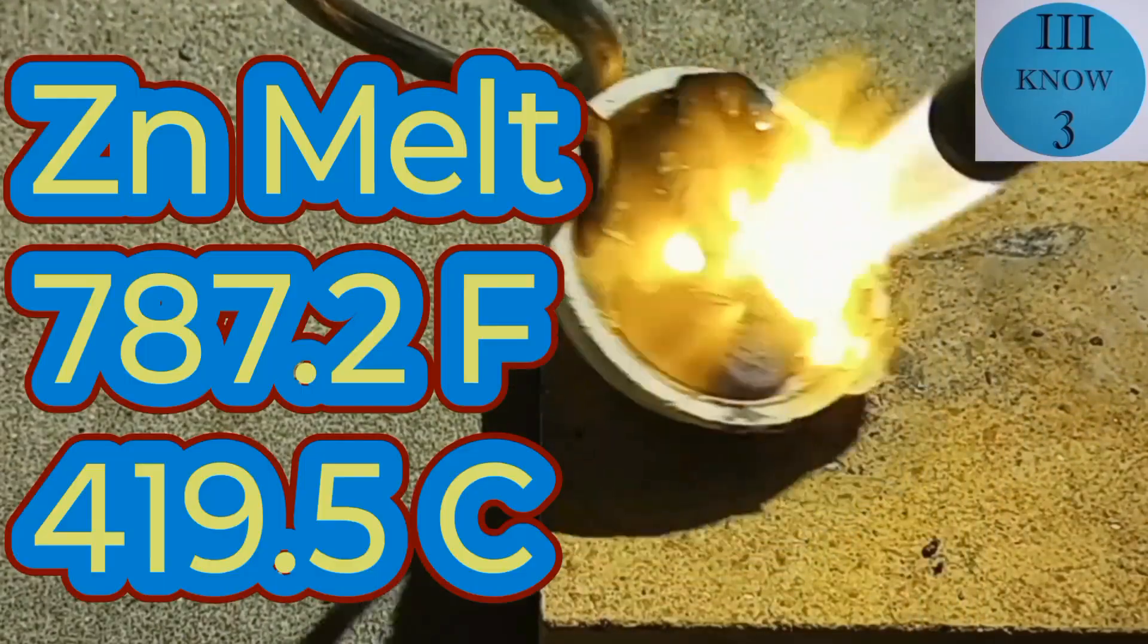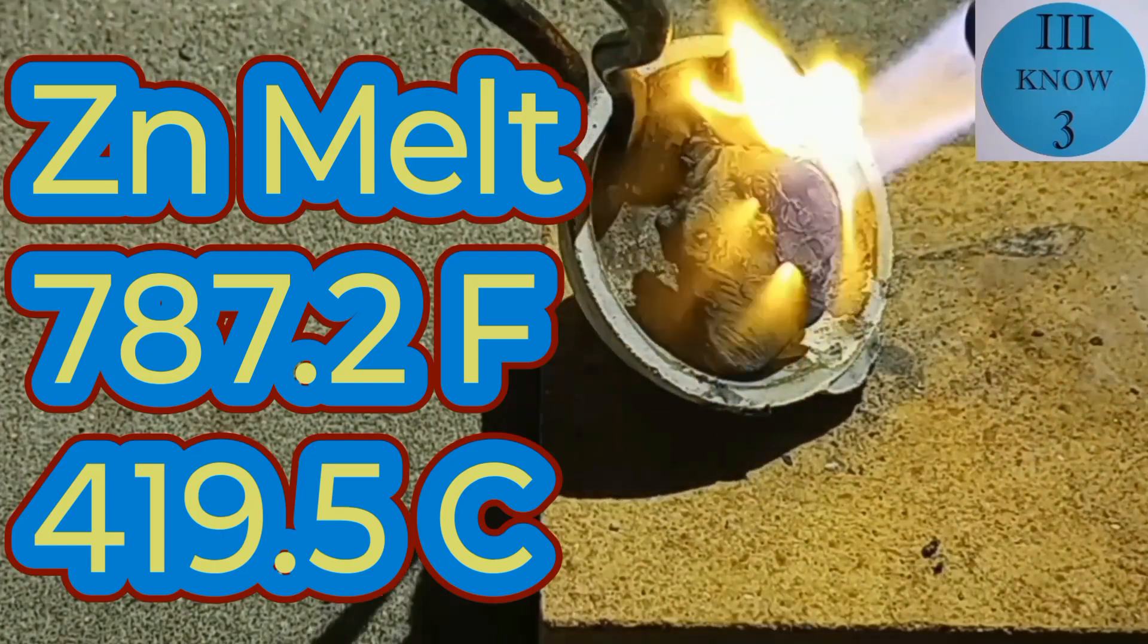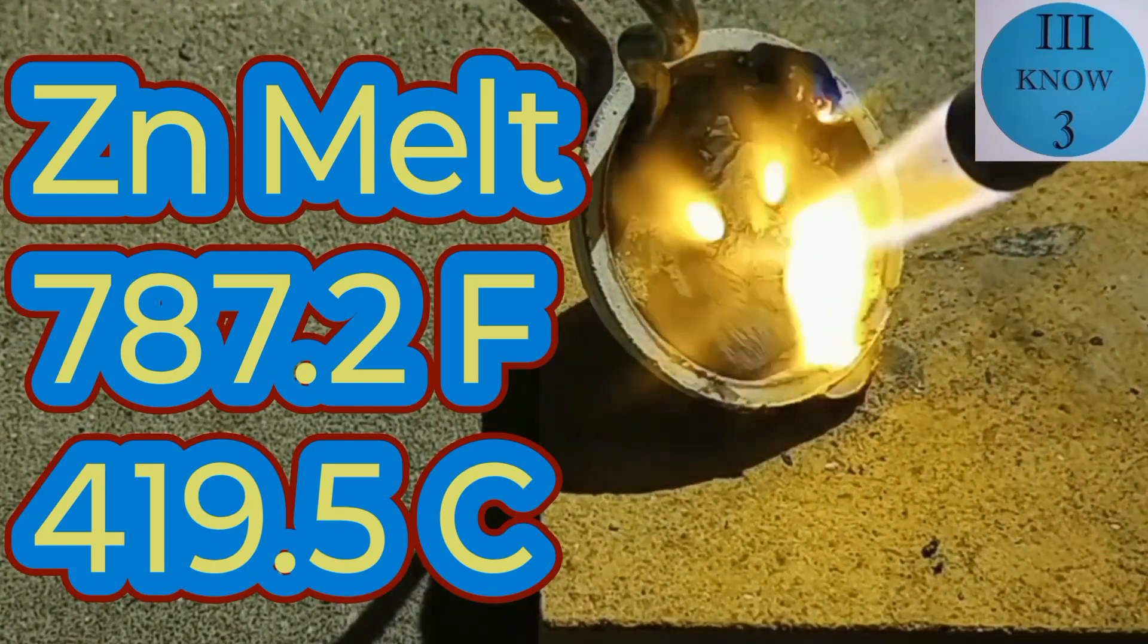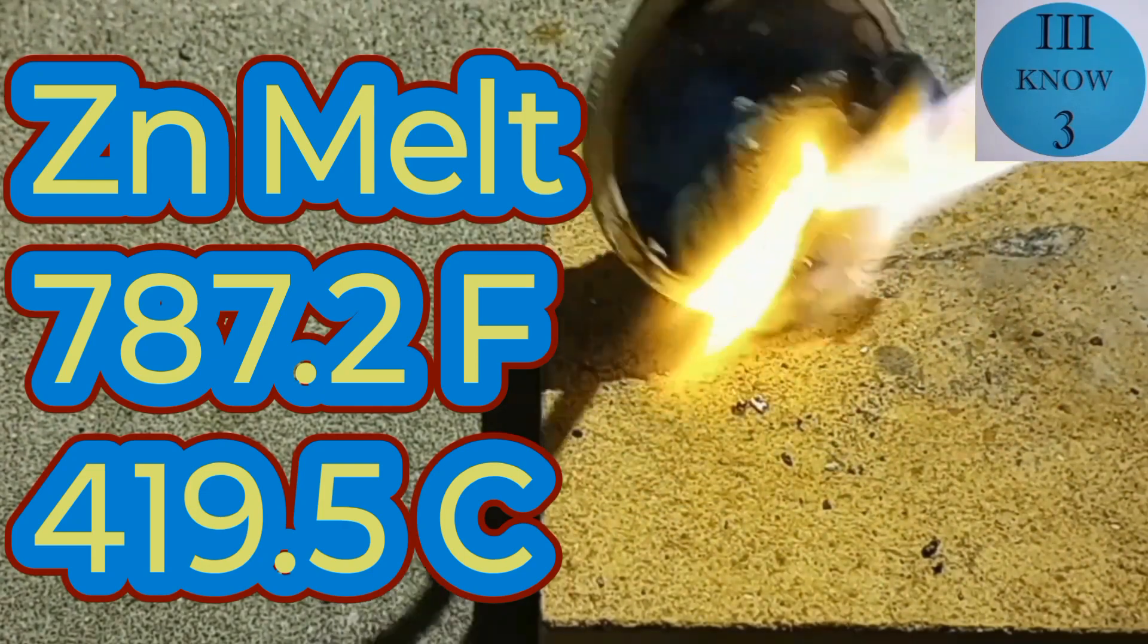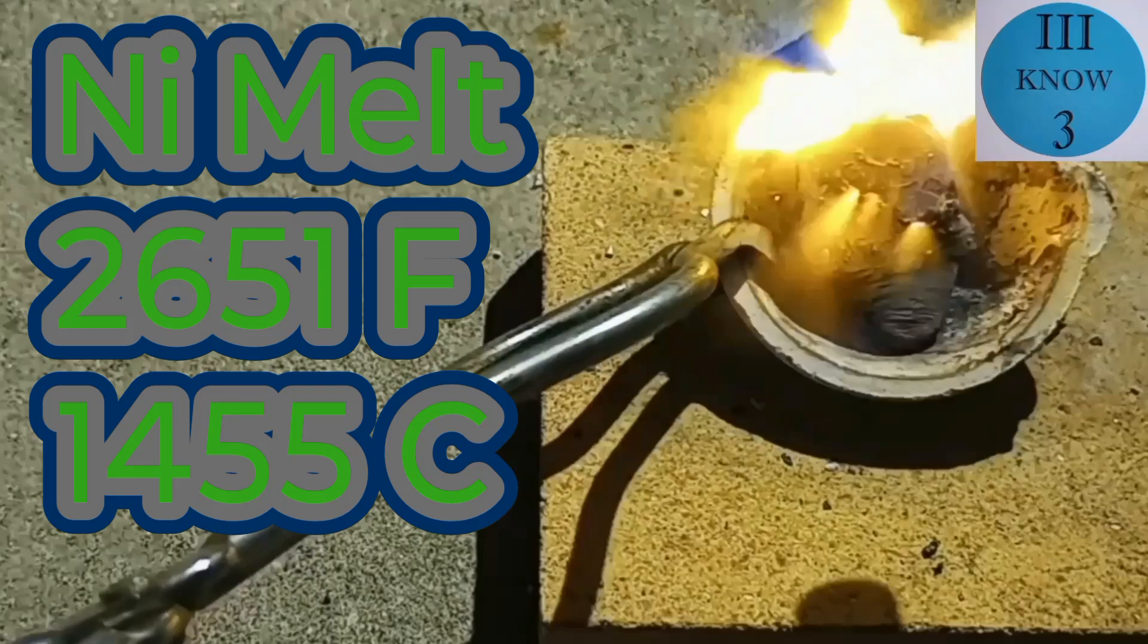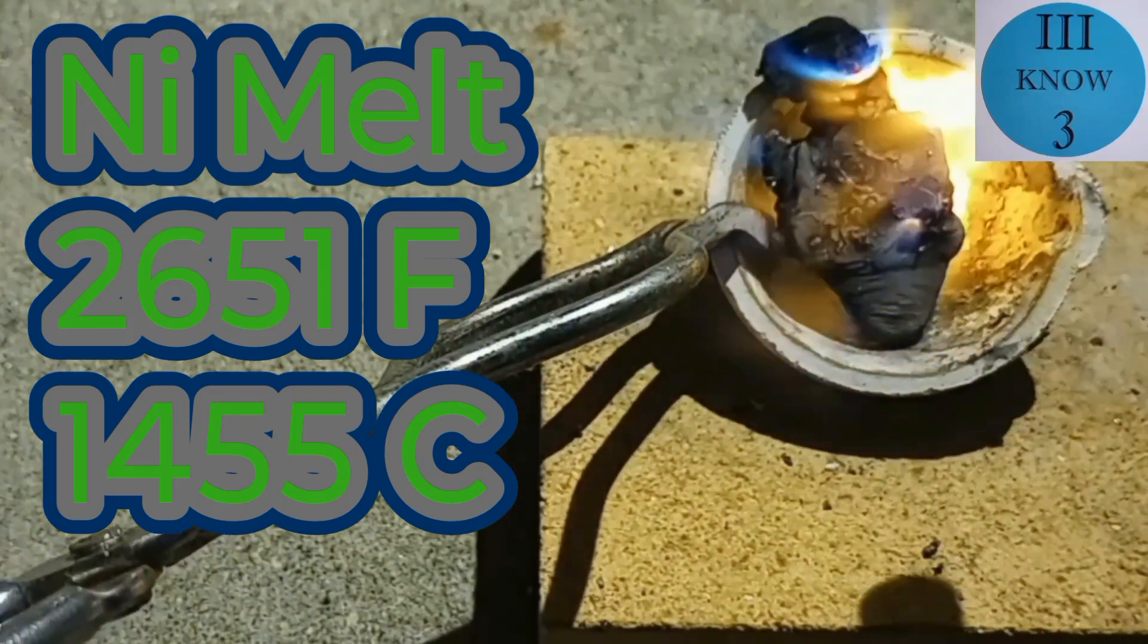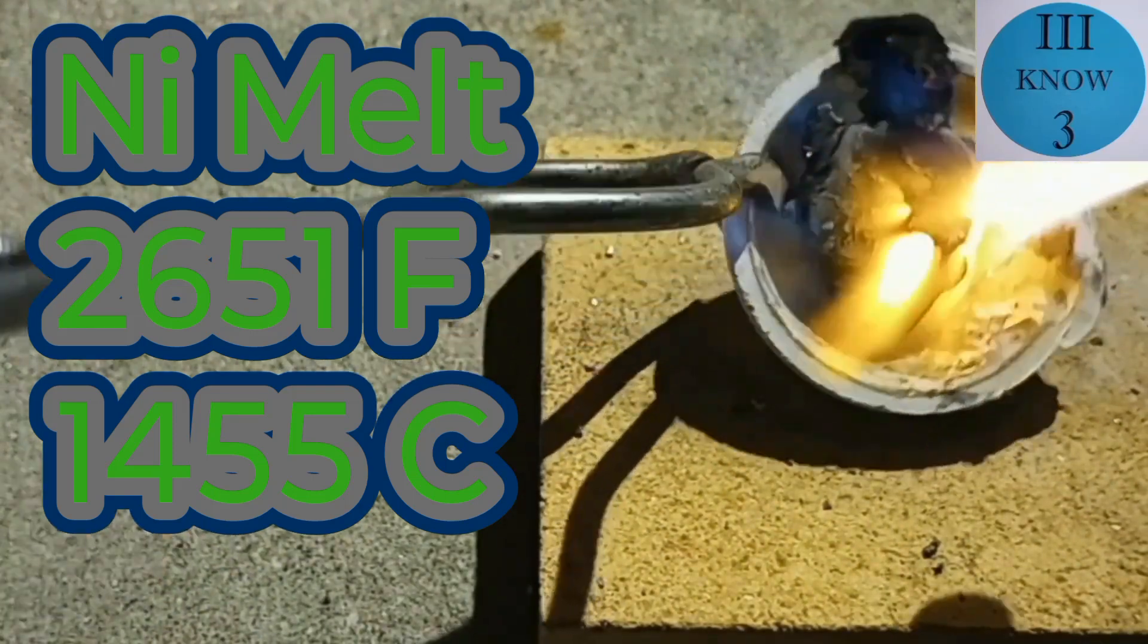Zinc has a melting point of 787.2 degrees Fahrenheit or 419.5 degrees Celsius. Nickel on the other hand is much higher at 2651 degrees Fahrenheit or 1455 degrees Celsius.